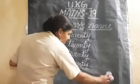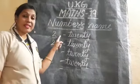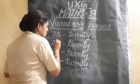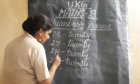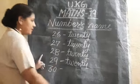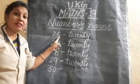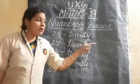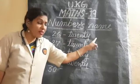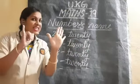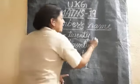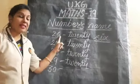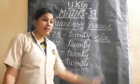What do we have to do? We will now write 26, 27, 28, 29, and 30. For 26: T-W-E-N-T-Y S-I-X. Twenty six — that is very simple.